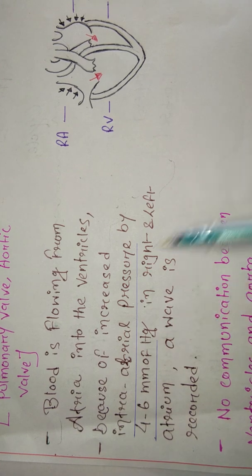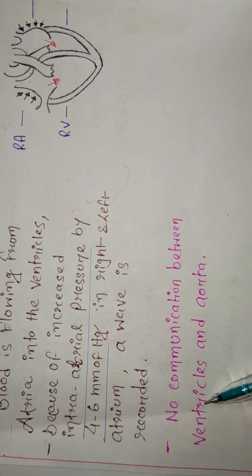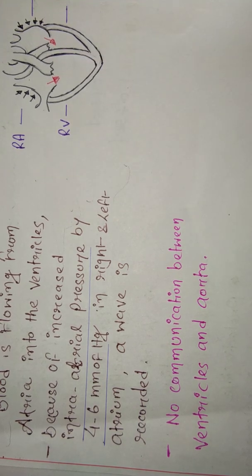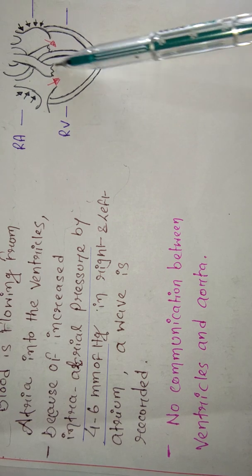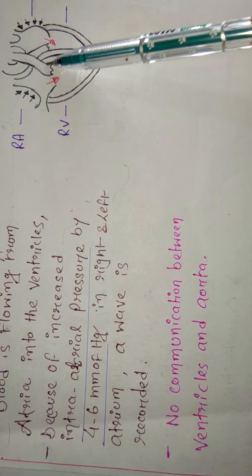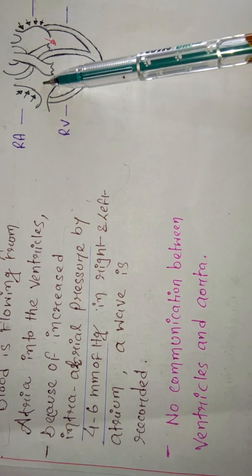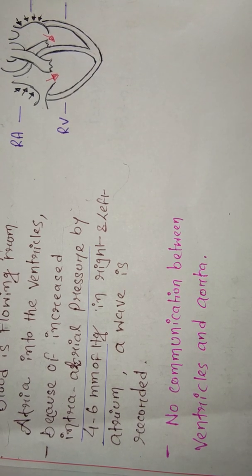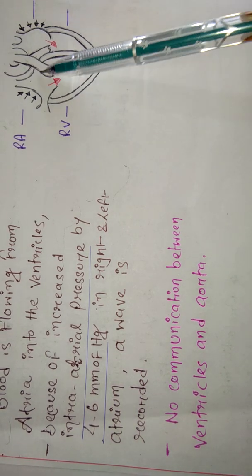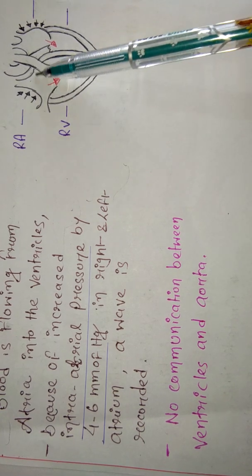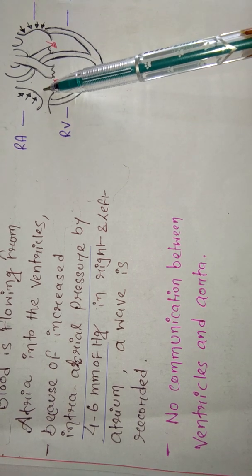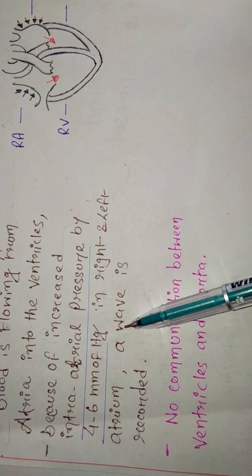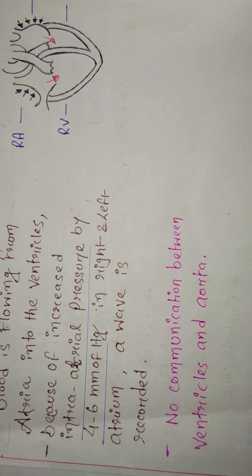There is no communication between the ventricles and the pulmonary artery or aorta during this phase — the semilunar valves remain closed. Communication exists only between the atria and ventricles. That covers atrial systole. I will explain the ventricular cycle and the 'a' wave in detail in the next part of the video. Thank you.